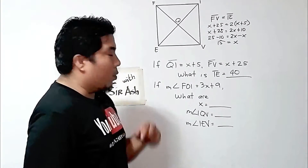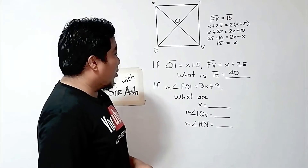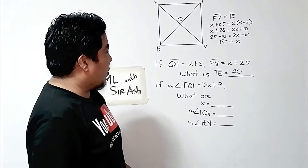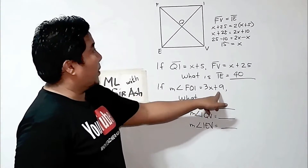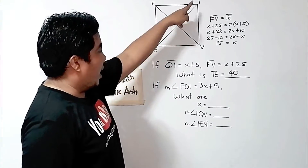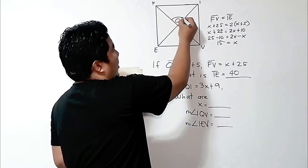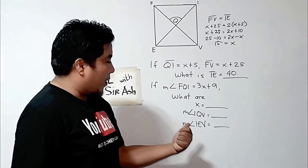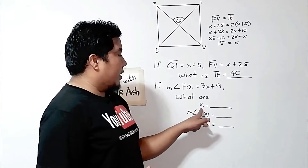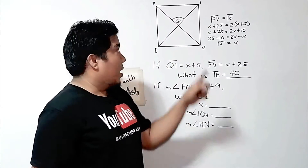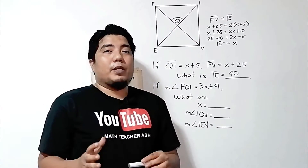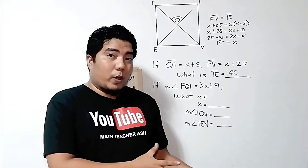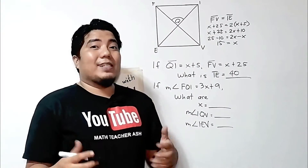Now let us go to our second problem. If the measurement of angle FQI is equal to 3X plus 9, what are the values of X, the measurement of IQV, and the measurement of IEV? Since our given is on the diagonal, and remember that in the properties of the rhombus — which also applies to squares — the diagonals are perpendicular with each other. Therefore, angle Q here is 90 degrees.